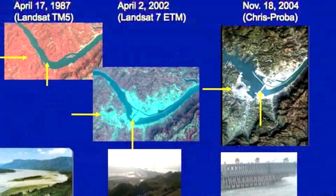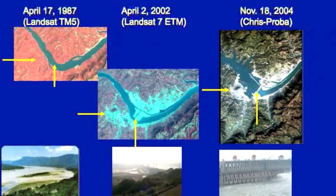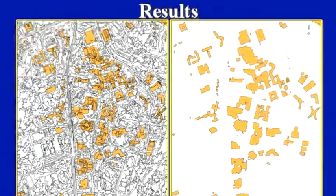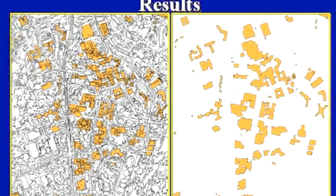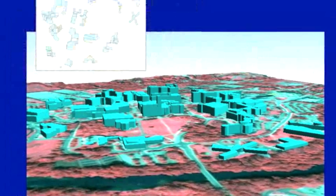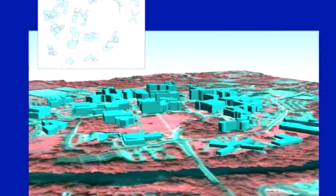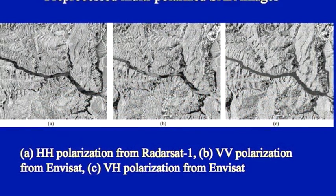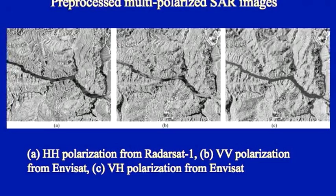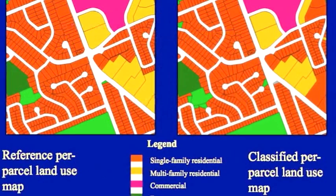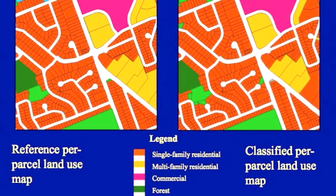They learn how to design research and how to do literature review and how to critically review the current status of development in certain areas. They learn the principles and concepts of image processing and they also learn computer software. And by the end, they all have very strong technical skills using computers to process satellite images.